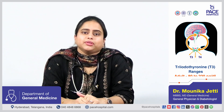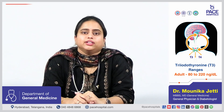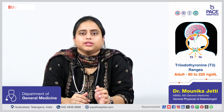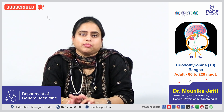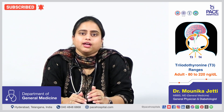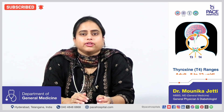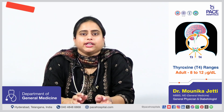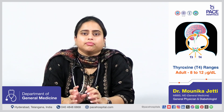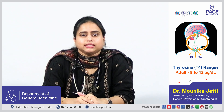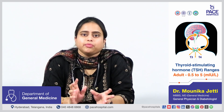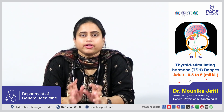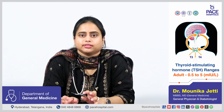In a normal adult, the normal T3 levels range from 80 to 220 nanograms per deciliter. T4 ranges from 8 to 12 micrograms per deciliter, and TSH ranges from 0.5 to 5 milli-international units per litre.